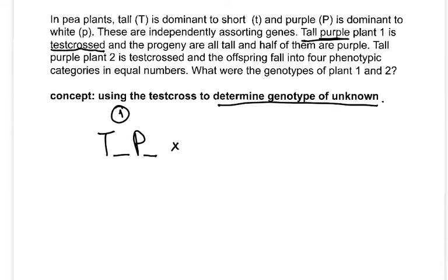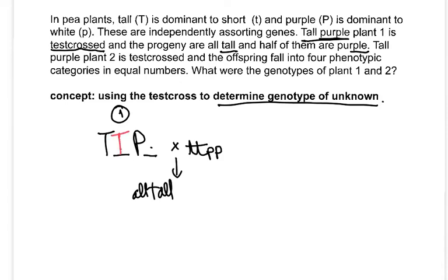When you do a test cross, you use an individual that will help reveal the genotype. The best way is to use the recessive homozygote — in a dihybrid context, that's the double homozygous recessive. The progeny of this first test cross are all tall and half are purple. All tall means there had to be a big T there, and half purple means there had to be a little p.